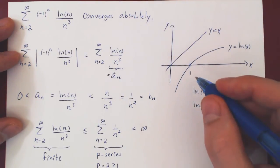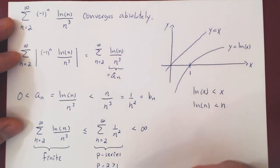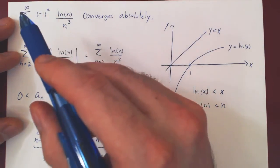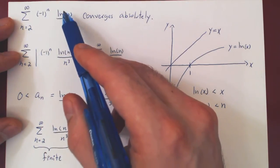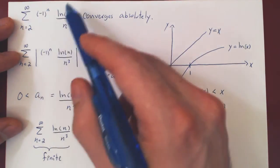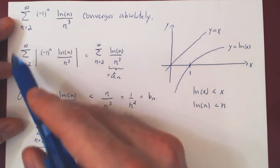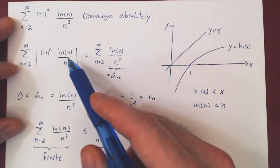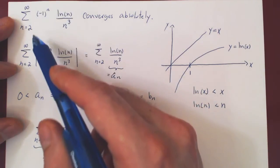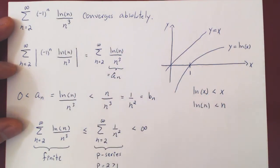And again, I want to emphasize this. What was nice about our argument is we never proved directly that the series converges. Instead, we proved that the series of the terms in absolute value converges with the comparison test. And because this series converges automatically, the series without the absolute value also converges, by, of course, the absolute convergence test.